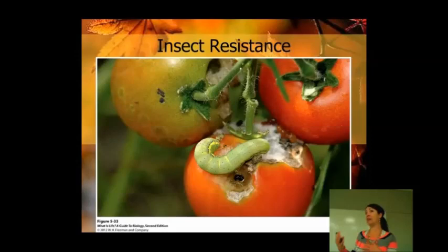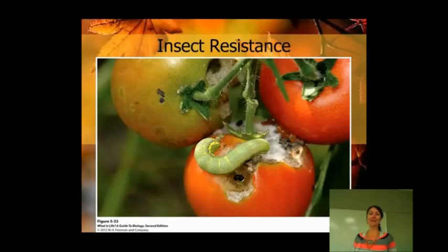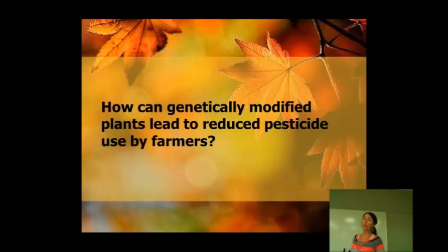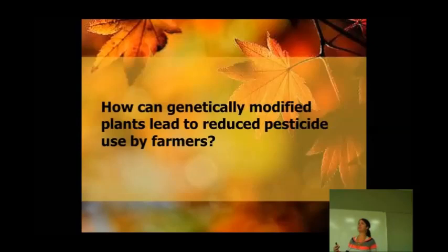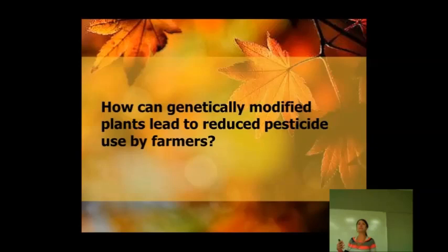But then you start thinking: if our crops are genetically engineered to kill off things that eat them, and then we eat them, that's probably not very good for us. So we might be able to reduce the amount of pesticides we're spraying on our plants, but creating this internal, genetically created pesticide may be creating new problems we don't even know about.